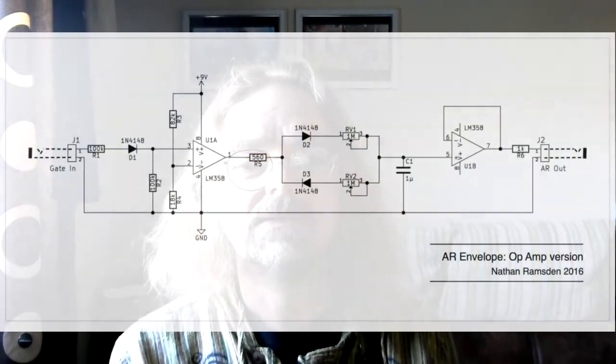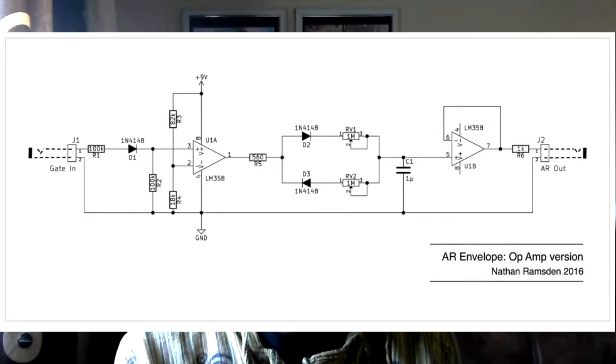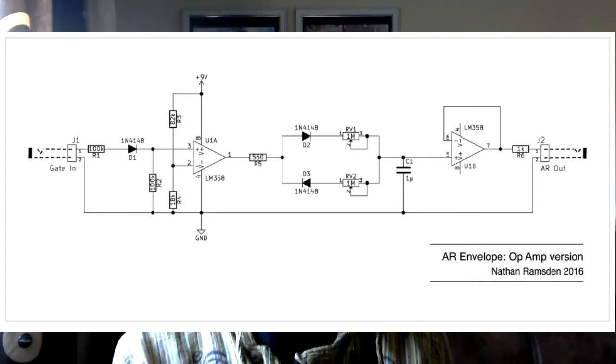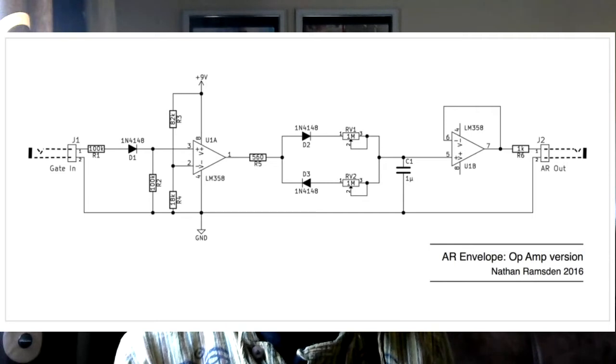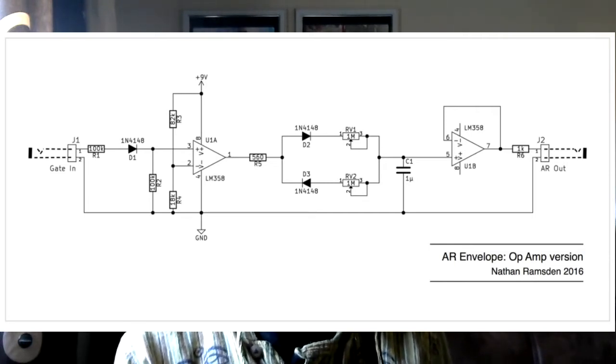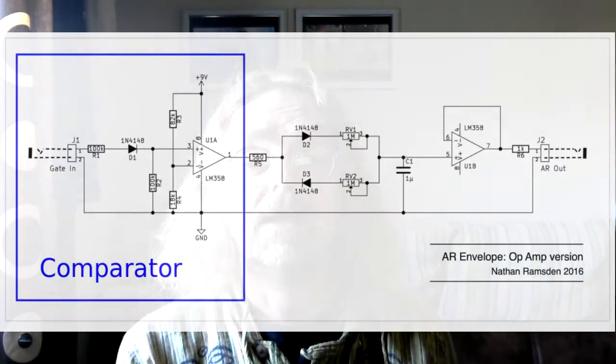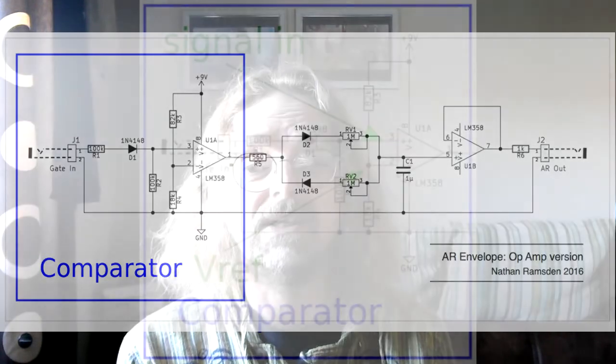So here is the total circuit. It's a relatively simple circuit based around a dual op amp. The circuit can be split into three stages. If we start with the input stage, this is basically a comparator circuit.